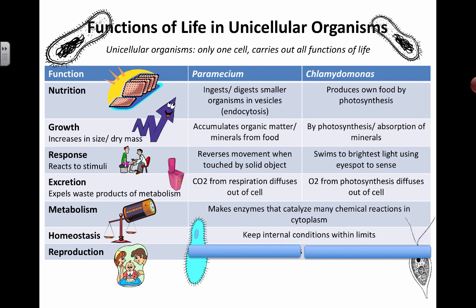For homeostasis, nothing particularly special. Because they have a membrane, they're able to separate their internal environment from the external environment. Just having that plasma membrane, which is selectively permeable, they're able to allow certain things in and keep certain things out, thereby maintaining homeostasis and keeping everything balanced inside.